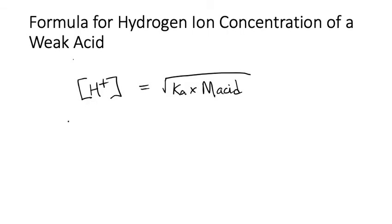The formula for the hydrogen ion concentration of a weak acid is: [H+] = √(Ka × Macid), where Ka is the acid dissociation constant and Macid is the molarity. In the next video, I'll work through examples.